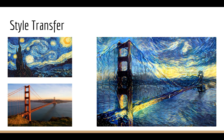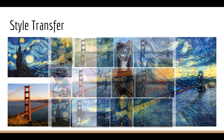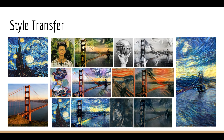Another interesting application of computer vision is the generation of images. The first area I think is interesting is called style transfer. This is where you can take a piece of art, like Starry Night by Van Gogh, and combine it with another image, say the Golden Gate Bridge. What we're doing here is taking the structure of the Golden Gate Bridge, but combining it with the style of Starry Night. We can apply different art styles by using different paintings, but as you can see, these are all still recognizable as the Golden Gate Bridge.